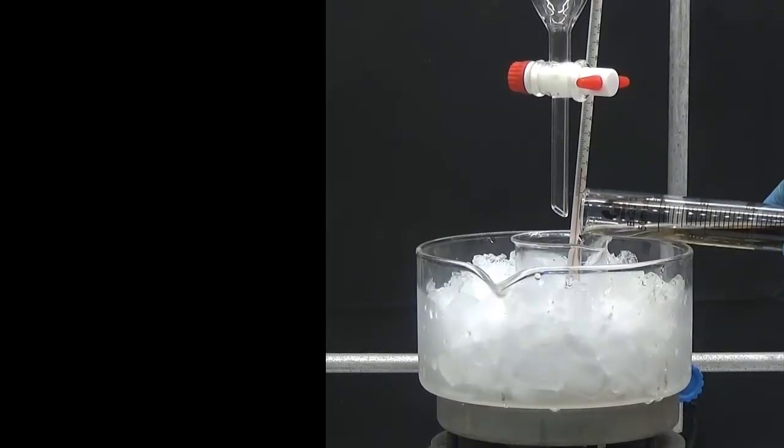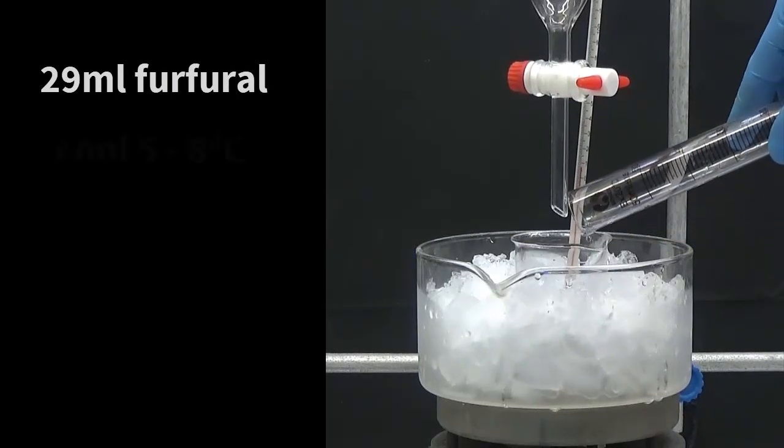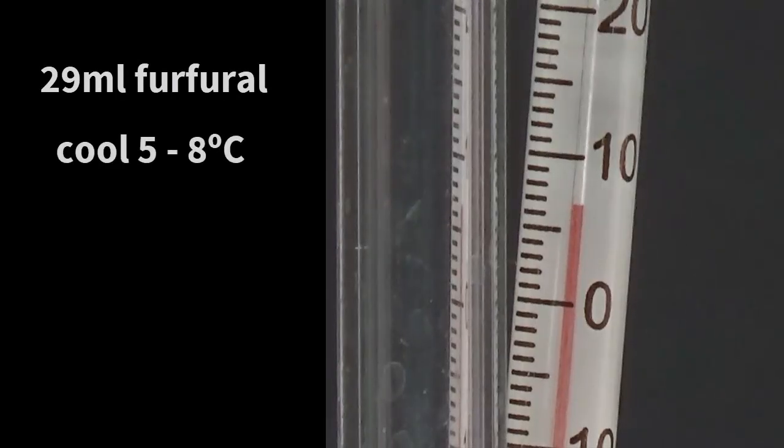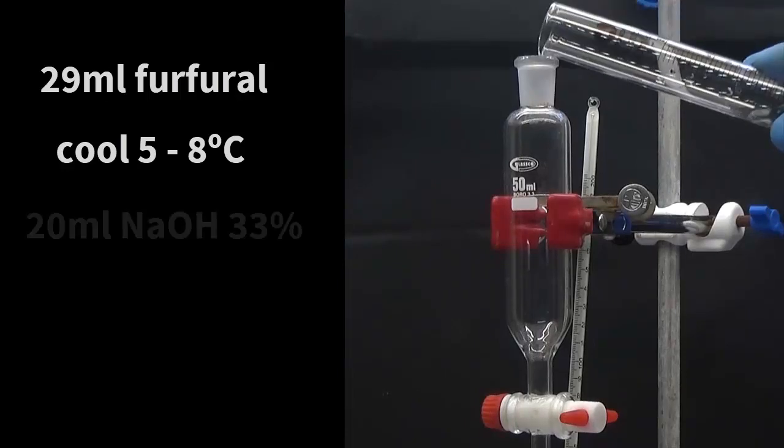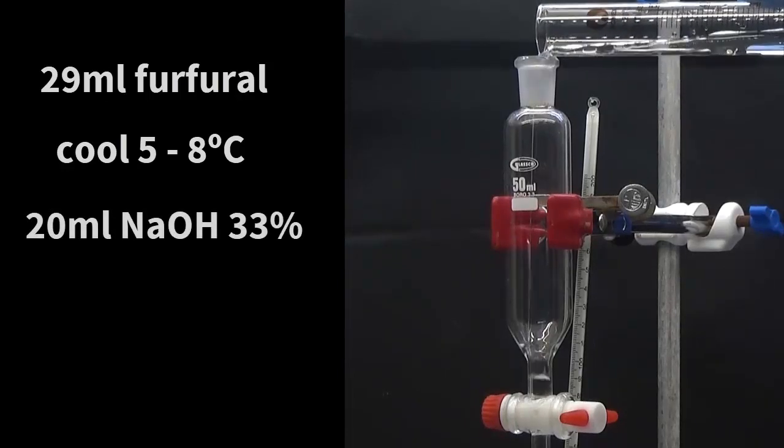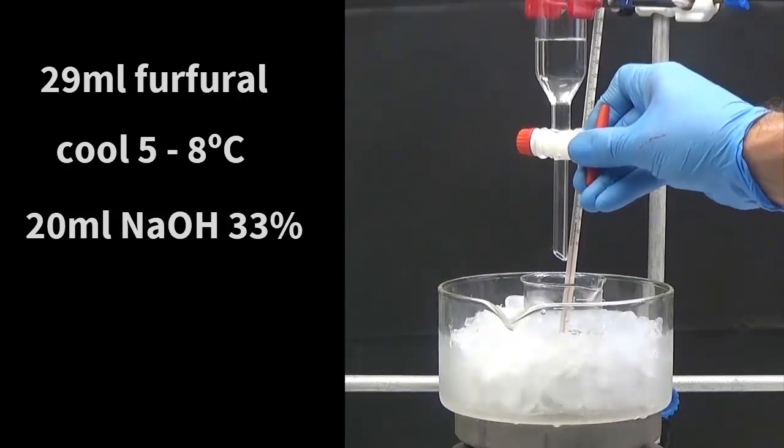In a 100 ml beaker place 29 ml of furfural and cool between 5 and 8 degrees. With agitation, add 20 ml of 33% sodium hydroxide solution at such a rate that the temperature of the mixture does not exceed 20 degrees.